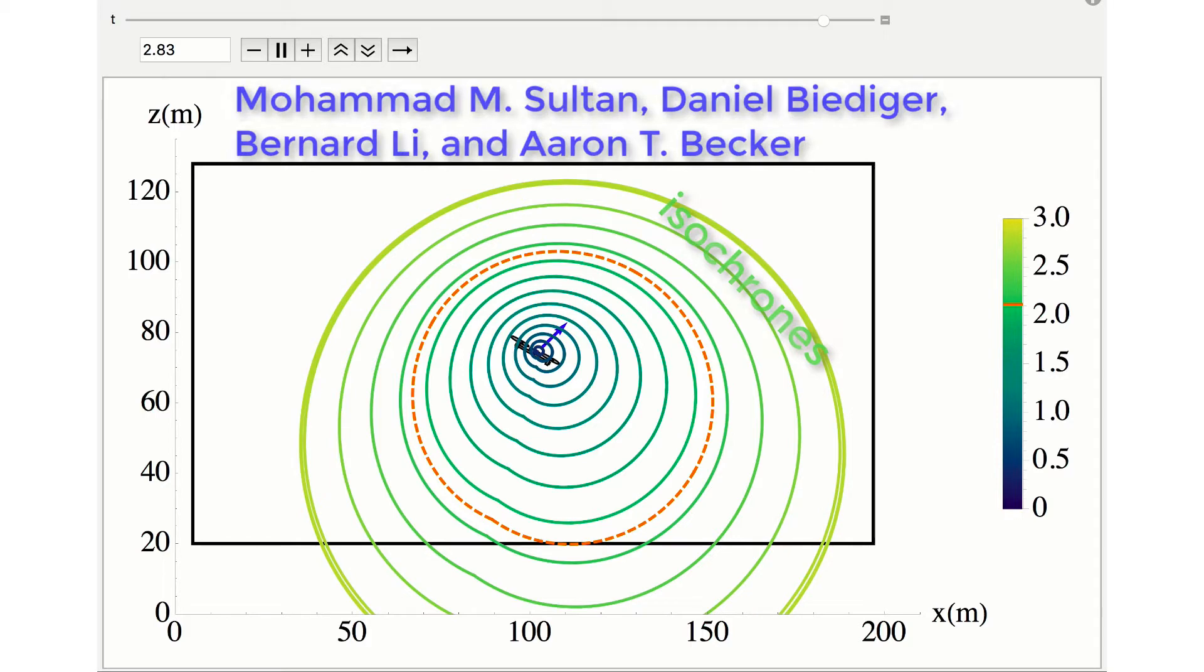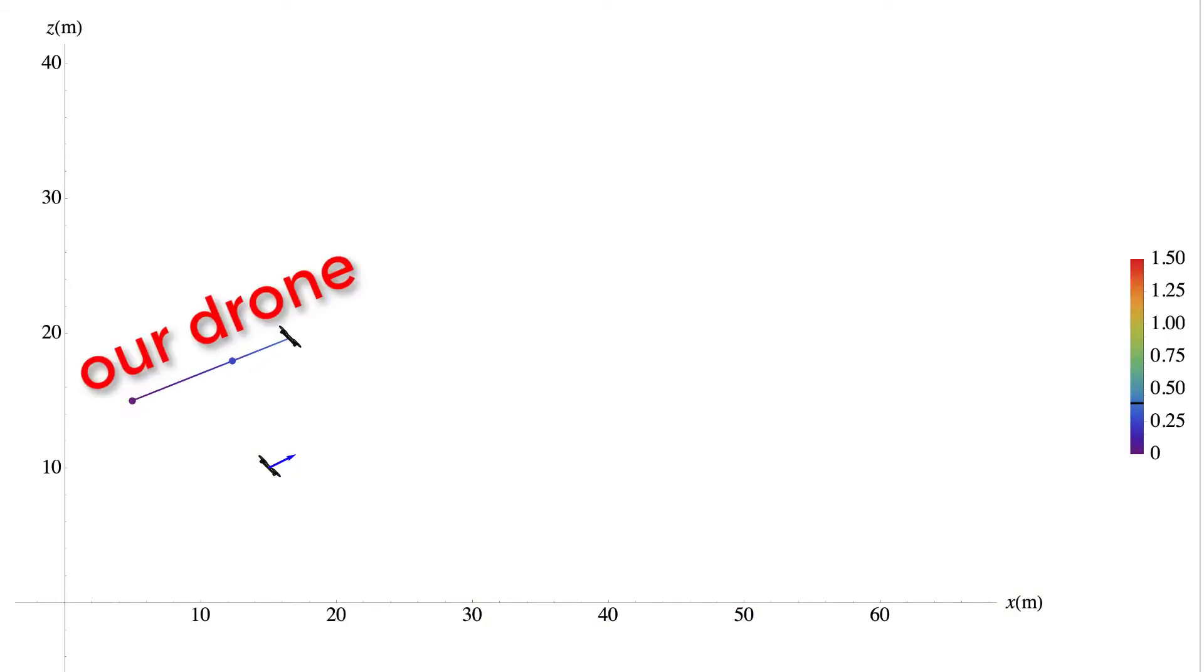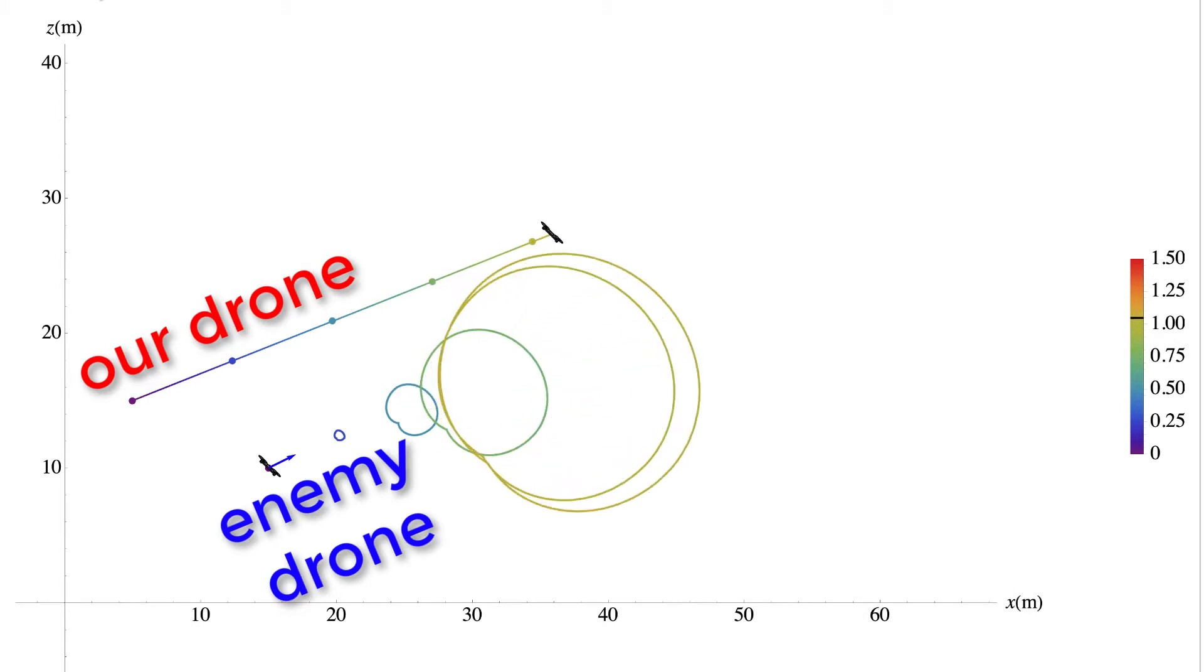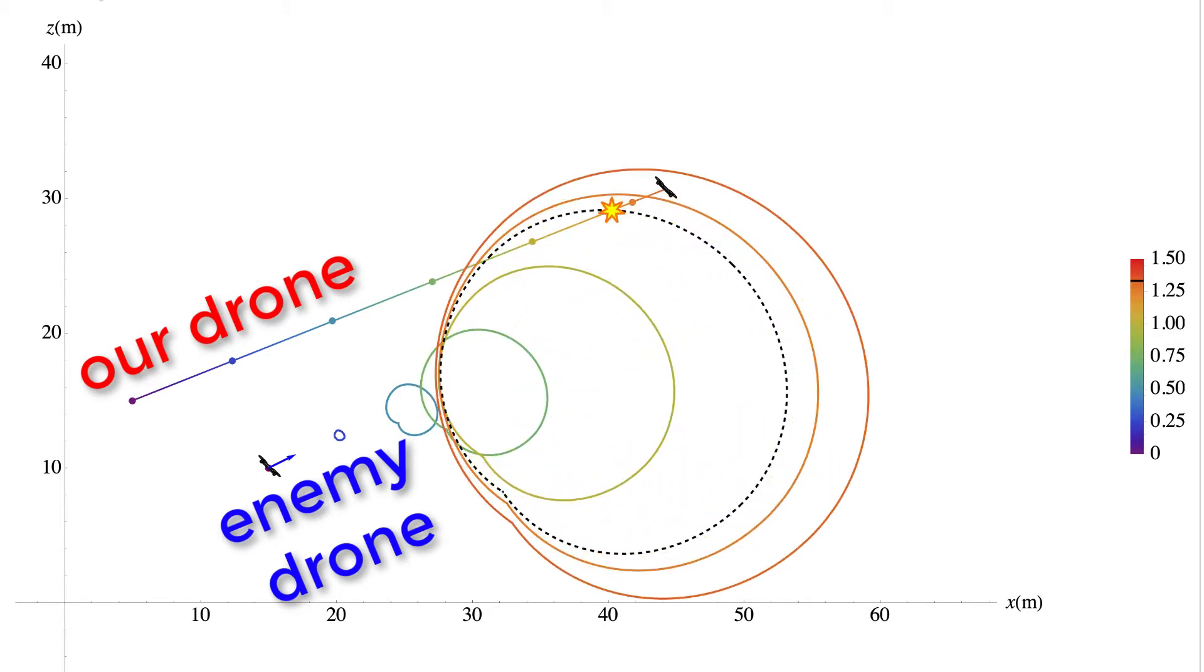If you are ever flying a drone around drones controlled by others, knowing the isochrones enables planning for collision avoidance. Here, we know the trajectory of our drone, but not the future path of the uncontrolled drone. The first possible collision is at 1.19 seconds.